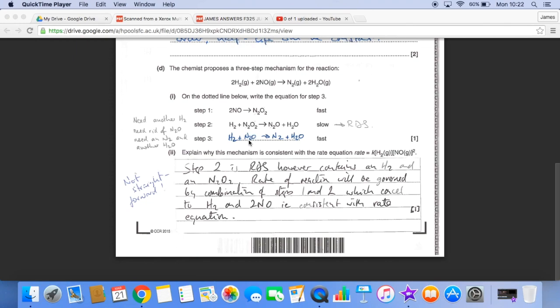So we need an N2O on this side of the step three equation to cancel with that one, because we've got no N2O in this equation here. And we need another water molecule because we've only got one here. And hopefully you can see that those N2O will cancel when we combine steps one and two. And so the equation for step three looks like this.